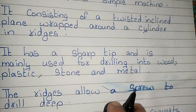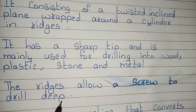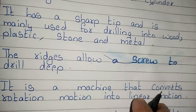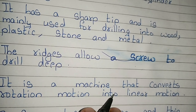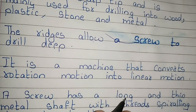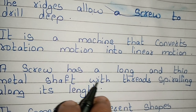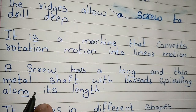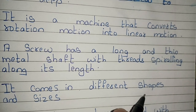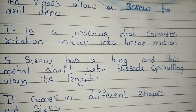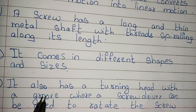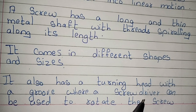The ridges allow a screw to drill deep. It is a machine that converts rotational motion into linear motion. A screw has a long and thin metal shaft with threads spiraling along its length. It comes in different shapes and sizes.